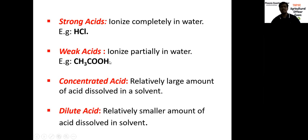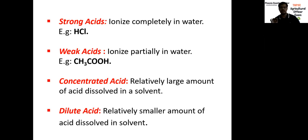Concentrated acid and diluted acid: concentrated acid contains a large amount of acid dissolved in a solvent. For example, if you take 10 ml water and add 90 ml acid, that is a concentrated condition — 90 ml is a large ratio. But if you take 90 ml water and add just 10 ml acid, that is diluted. For diluted acid, a very small amount of acid is dissolved in a solvent.